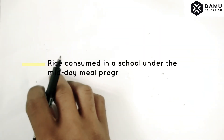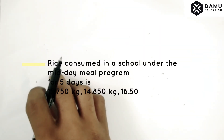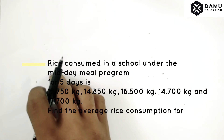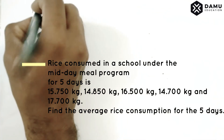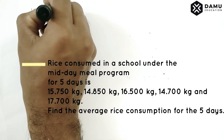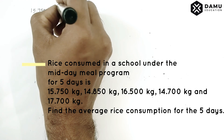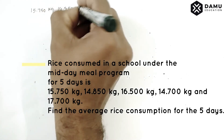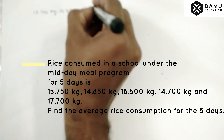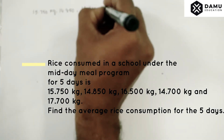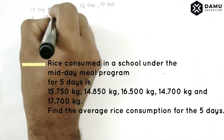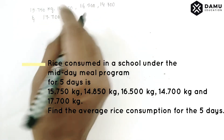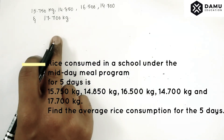Hello viewers. In this session we're going to discuss the solution for this exercise: rice consumed in a school under the midday meal program for five consecutive days. The values given are 15.750 kilograms, 14.850 kilograms, 16.500 kilograms, 14.700 kilograms, and 17.700 kilograms.